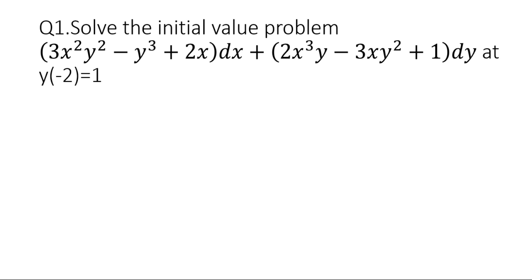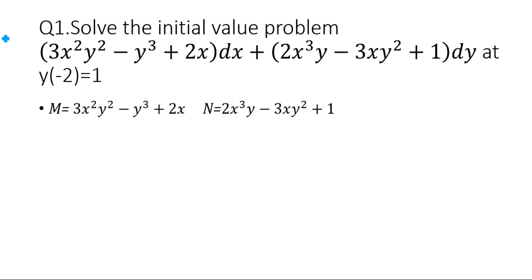The first question is to solve an initial value problem. The equation given is: (3x²y² − y³ + 2x)dx + (2x³y − 3xy² + 1)dy = 0, with the initial condition y(−2) = 1. We will segregate this as M and N: M = 3x²y² − y³ + 2x and N = 2x³y − 3xy² + 1.